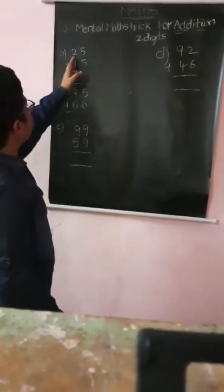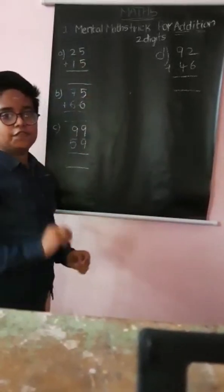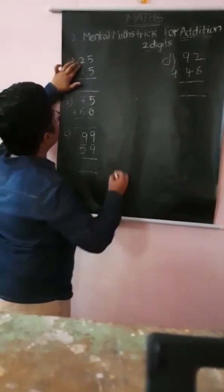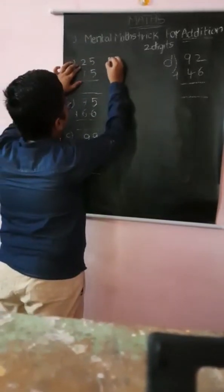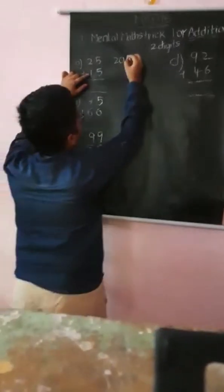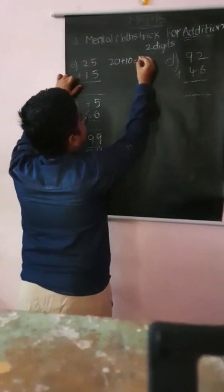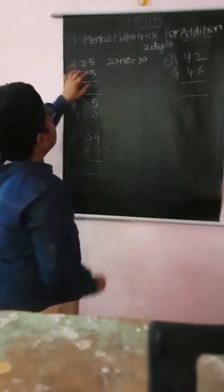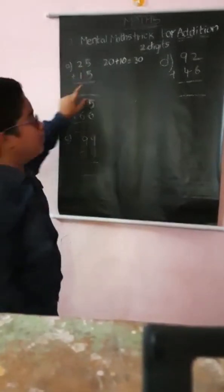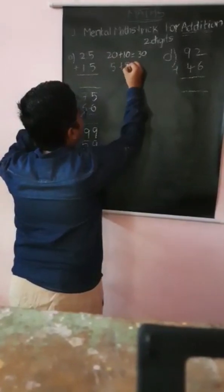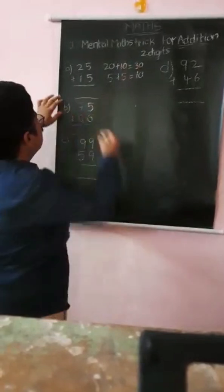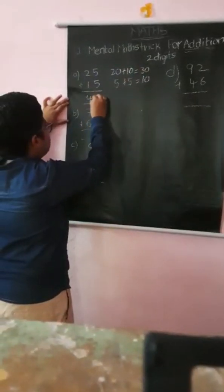First problem: 25 plus 15. In this trick, you take the tens place. In the tens place there is number 2, then 20, and downwards the number 1, which is 10. So 20 plus 10 is 30. Now in the ones place, the number is 5 and downwards the number is also 5. Then 5 plus 5 is 10. So the answer is 30 plus 10 is 40.